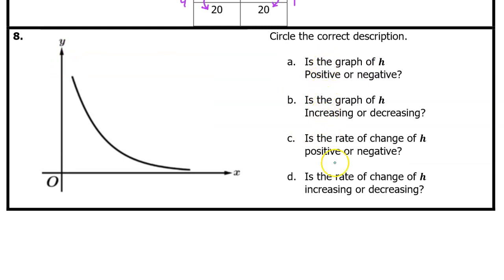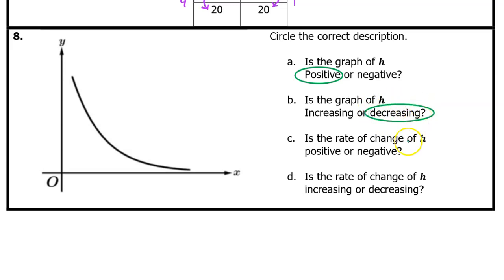For number 8, we need to answer four questions all about this graph of h. First of all, is the graph of h positive or negative? The entire graph is above the x-axis — that makes the graph of h positive. Next, is the graph of h increasing or decreasing? Because h is going downhill from left to right, the y values are falling — then it is decreasing. Is the rate of change of h positive or negative? Rate of change means the slope when you're looking at a graph. So if you make a tangent line, any tangent line you draw on this graph is going to be downward sloping — that is a negative rate of change.